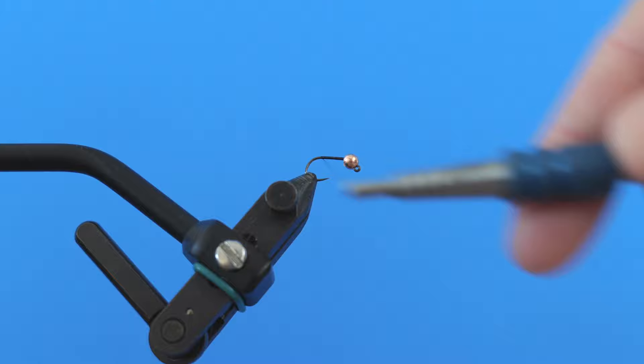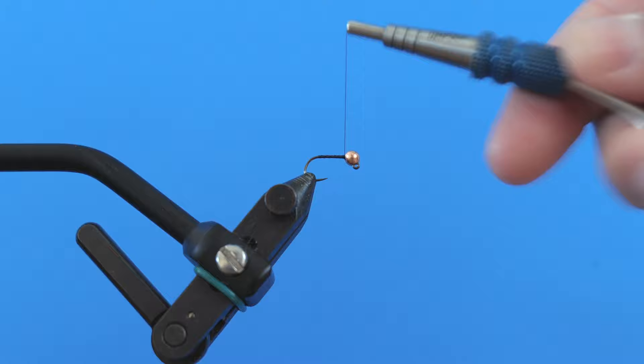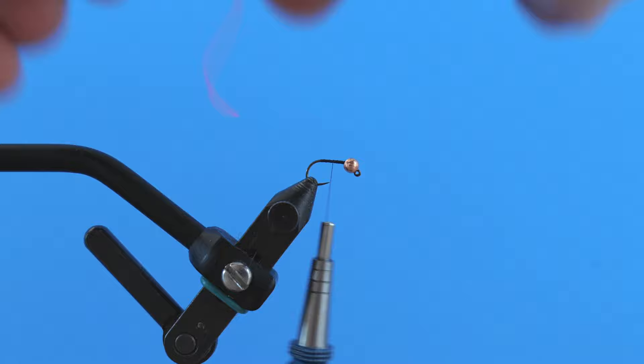So I'm going to advance my thread back to where the barb would be. This is a Fulling Mill size 14 jig hook. You could use the Umpqua's are really nice. You could use a Hanak hook. It doesn't really matter. This is just the one that I had.